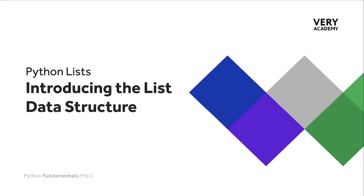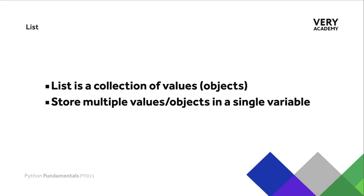The list data type is one of four built-in data types in Python used to store collections of data. Of the four different data types used to store collections, they all have different characteristics. The list is probably one of the most versatile data types available in Python — you will find them in virtually every Python program.